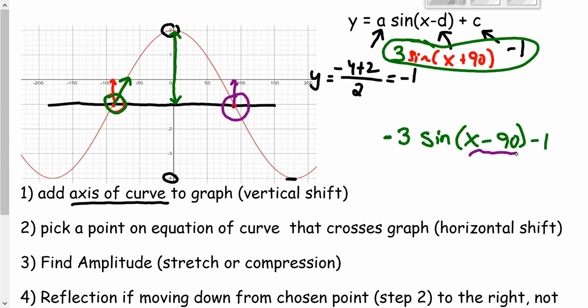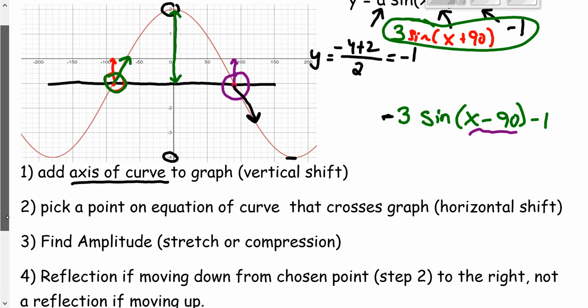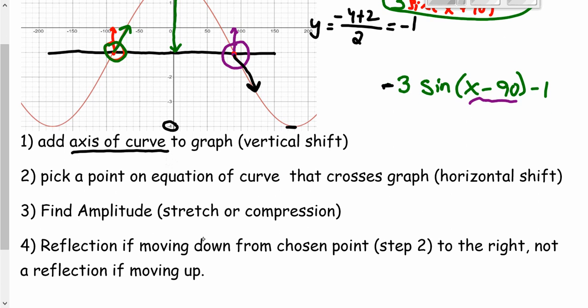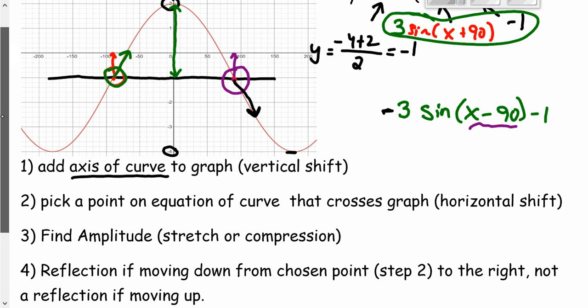And what it also means is it's going to be a reflection because moving from that point along the graph to the right, we're moving down in this direction, which is going to create that negative sign in front of our amplitude. It says reflection if moving down from the chosen point. And this one moves down. So it's a reflection.